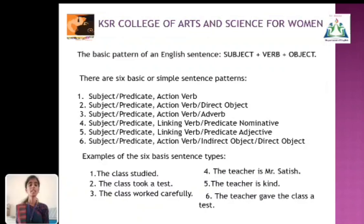There are six basic or simple sentence patterns: (1) subject or predicate + action verb, (2) subject or predicate + action verb + direct object, (3) subject or predicate + action verb + adverb, (4) subject or predicate + linking verb + predicate nominative, (5) subject or predicate + linking verb + predicate adjective, (6) subject or predicate + action verb + indirect object + direct object.